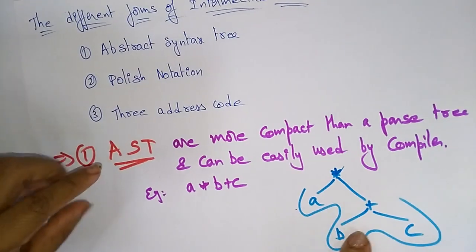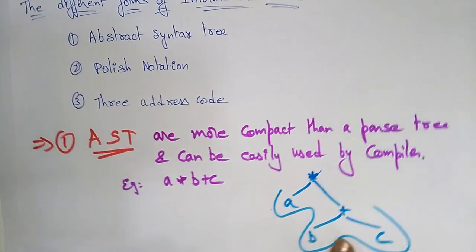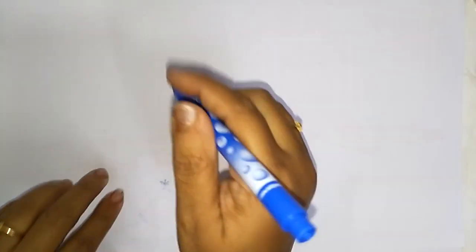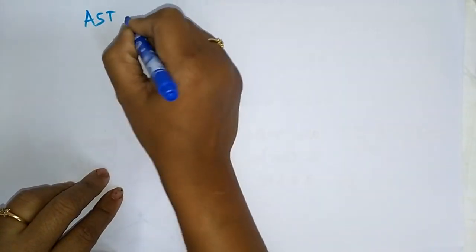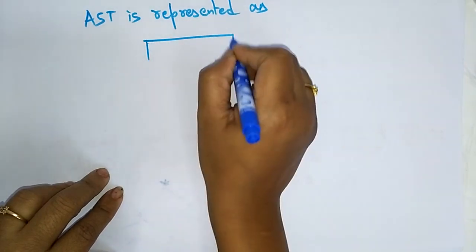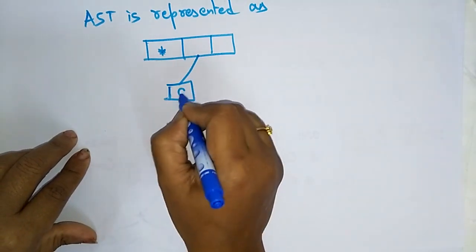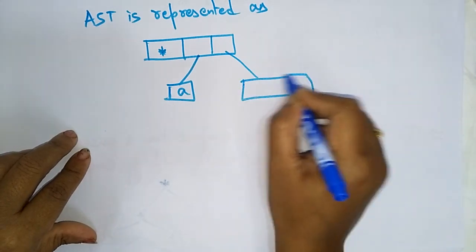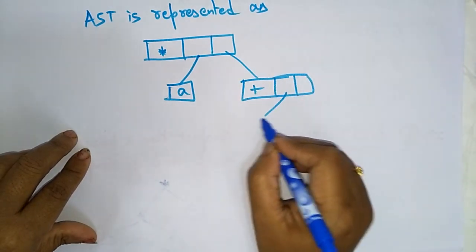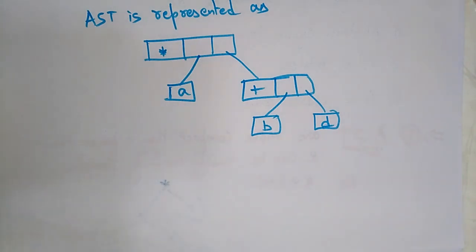So this abstract syntax tree can be represented — I want to make an abstract tree because abstract trees are more compact than the parse tree and can be easily used by the compiler. How do compilers easily use this abstract syntax tree rather than a parse tree? Because this abstract syntax tree is represented just like memory locations, taking the star and the stack with the operands. This is the abstract syntax tree for that expression, and it can be more easily understood by the compiler than the parse tree.